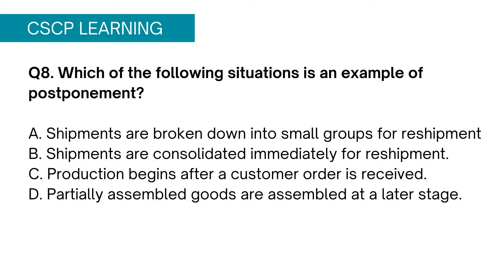Option C states that production begins after a customer order is received. At first glance this seems appropriate, but if the lead time is too long you will lose your customer, so this is not the viable option. Option D, partially assembled goods are assembled at a later stage, is the correct answer. Recall the subway sandwich example — all ingredients are ready for assembling based on the customer's preference, and the sandwich is then prepared. This is postponement.